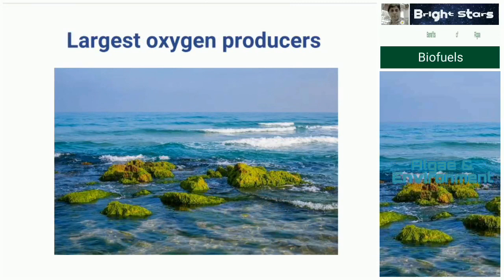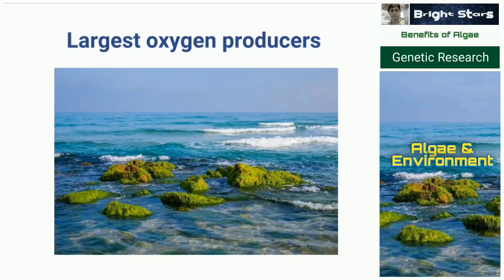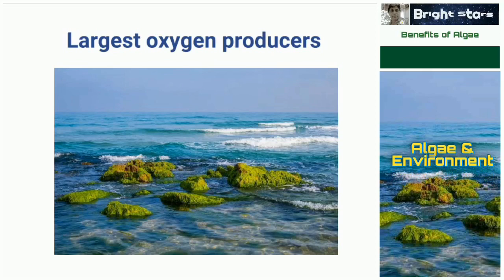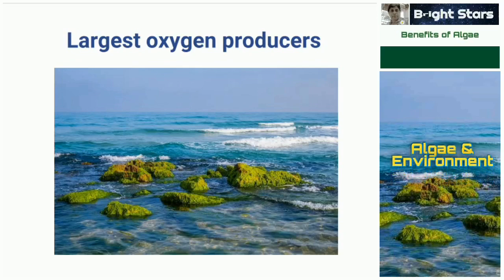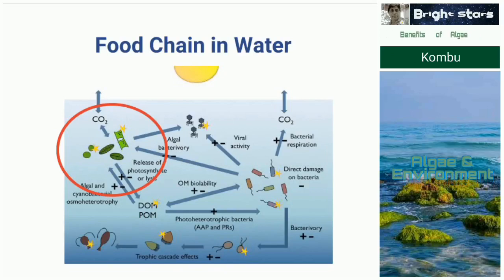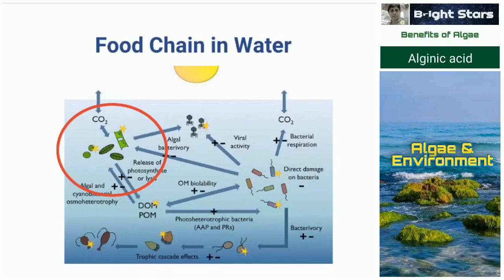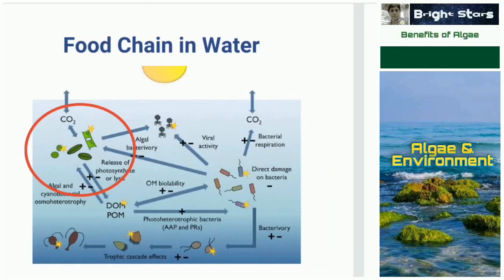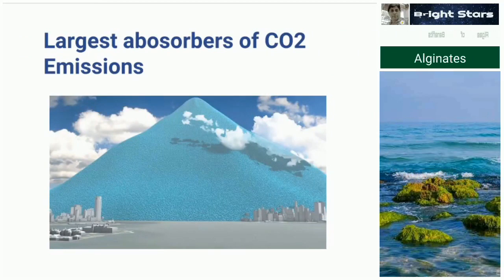Algae are the largest oxygen producers in the world. Human beings and animals require oxygen, and without oxygen no life can exist. The major part of oxygen in this world has been produced for billions of years by algae. They are also the most important part of the food chain in water — phytoplankton or green algae are eaten by small fishes, and small fishes are eaten by bigger fishes, forming a larger food chain in seas and oceans.